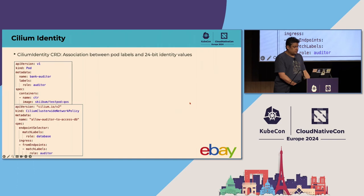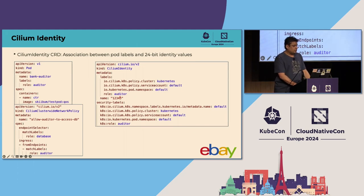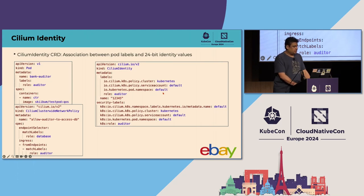There is another piece to this puzzle: the Cilium identity CRD — custom resource. This custom resource allows Cilium to associate labels with integer identity values. These integer identity values facilitate efficient policy lookup in the BPF programs. In this example, the identity value 12345 is associated with the label role=teller.